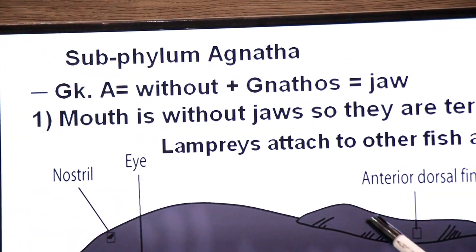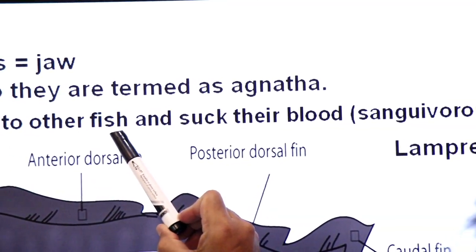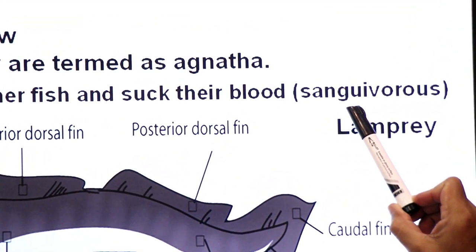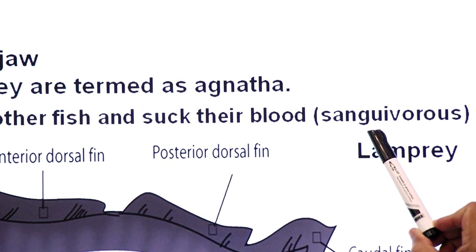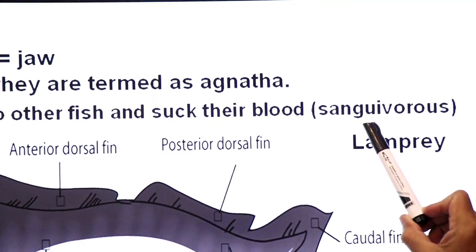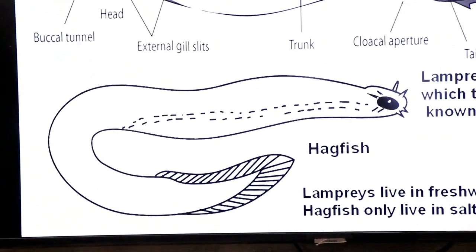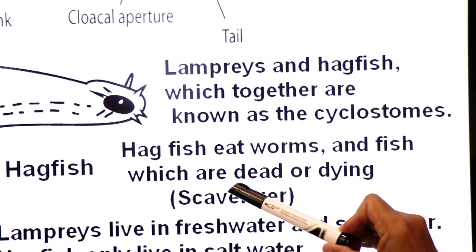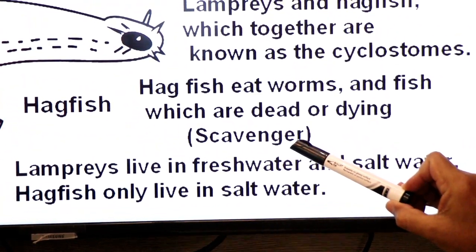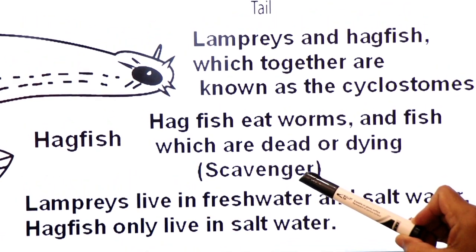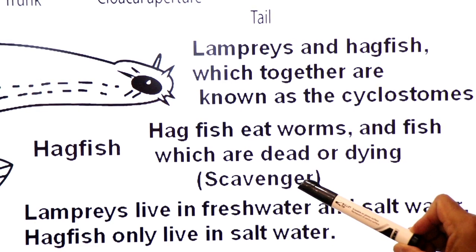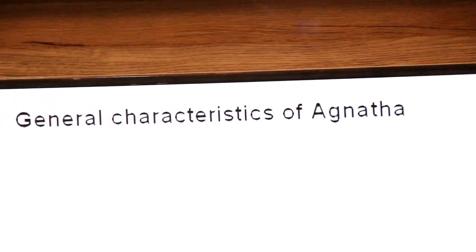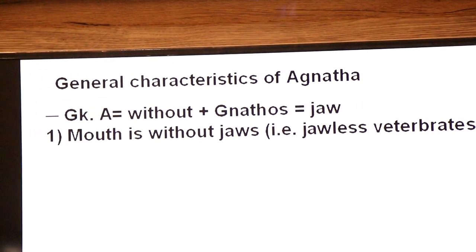Lampreys attach to other fish as ectoparasites and suck their blood — they are sanguivorous in nature. Sanguivorous means blood-sucker: those which feed on the blood of other animals. Hagfish are scavengers — they eat worms and fish which are dead or dying. A scavenger is an animal that feeds on the bodies of dead animals or particles of dead bodies.